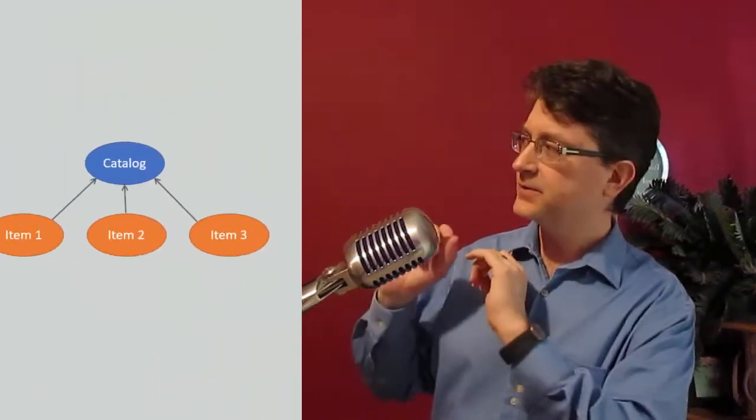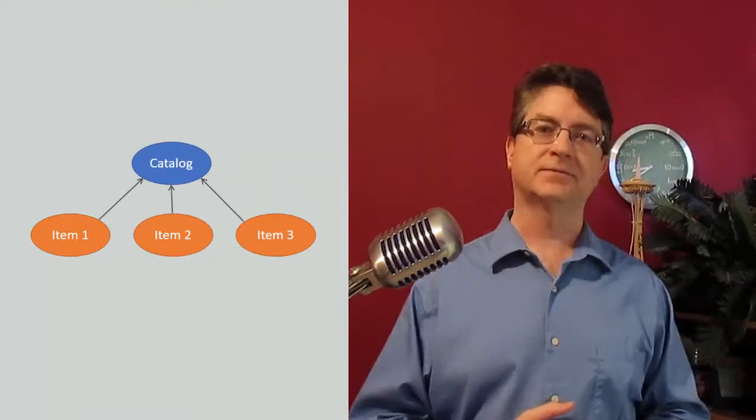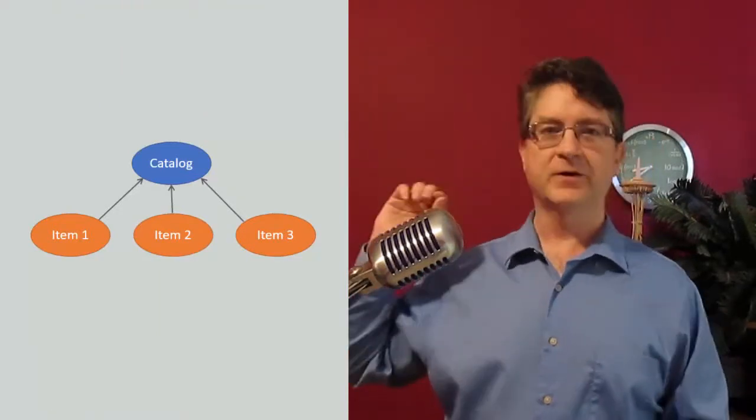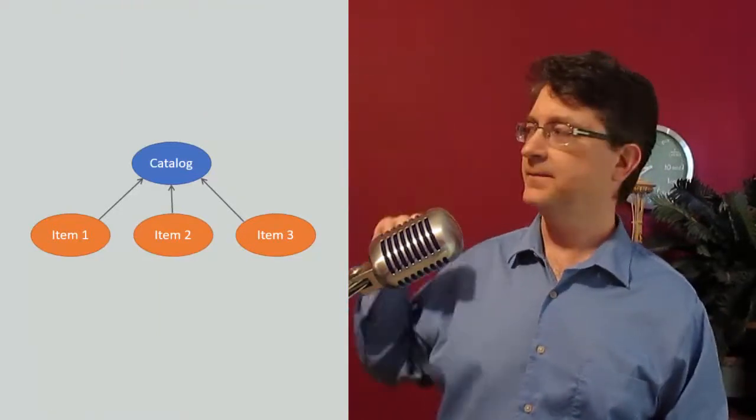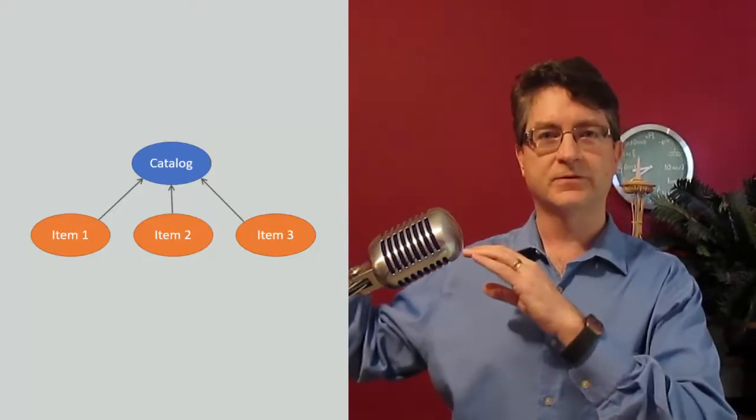No, instead, a historical model would use a set of successors as resources. Say, for example, you had this particular historical model. We've got some parent, some predecessor up here, and it's got a few successors.